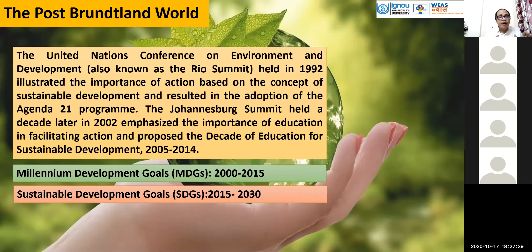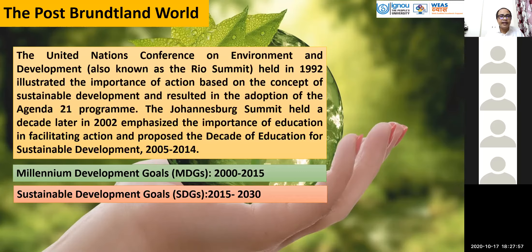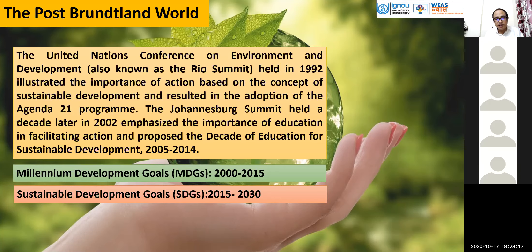After the first Rio Summit, in the post-Brundtland era, global common efforts include the Rio Summit with Agenda 21, followed by Johannesburg 2002. We have the Decade of Education for Sustainable Development from 2004. Before Rio Plus 10, we implemented Millennium Development Goals to achieve eight goals from 2000 to 2015, followed by Sustainable Development Goals with 17 goals to be achieved by 2030.